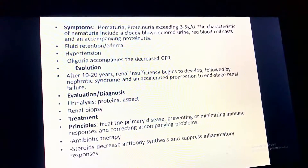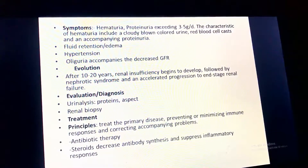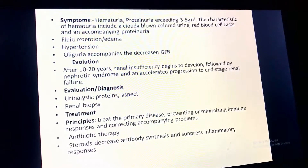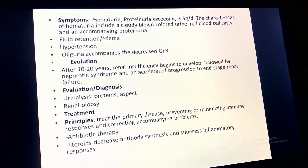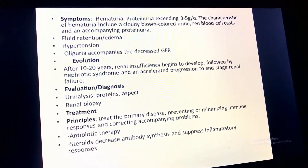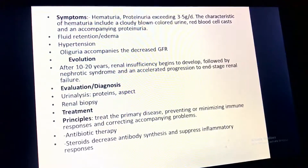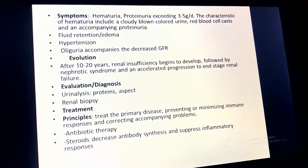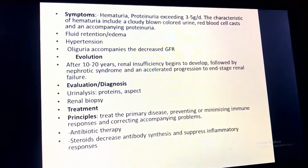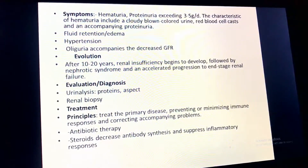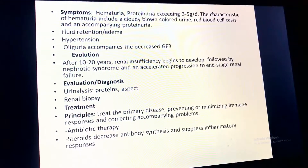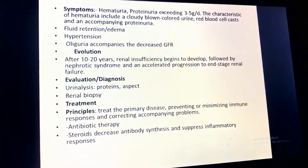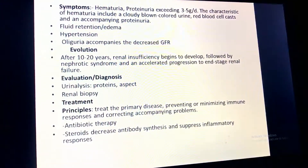Hypertension and oliguria accompany decreased glomerular filtration rate. After 10 to 20 years, renal insufficiency begins to develop, followed by nephrotic syndrome and accelerated progression to end-stage renal failure. Evaluation and diagnosis include urinalysis, protein assessment, and renal biopsy. Treatment principles include treating the primary disease, preventing or minimizing immune responses, and managing complications. Antibiotic therapy and steroids to decrease antibody synthesis and suppress inflammatory response can be given.